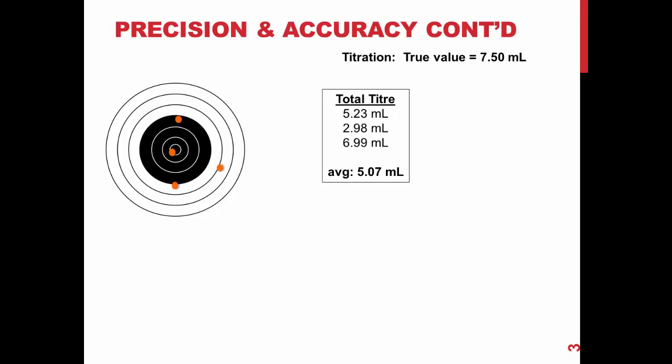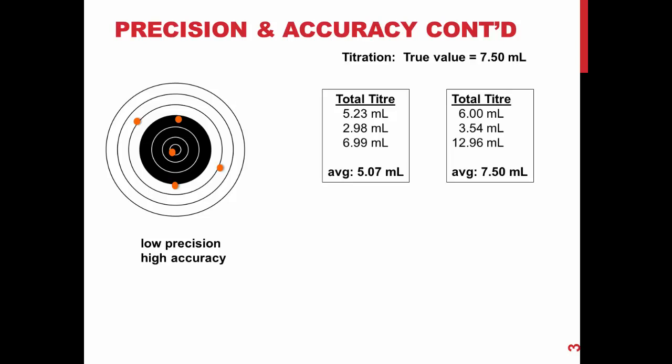In this example, the set of throws are all over the place showing low precision, yet they have high accuracy because all of them average to the bullseye.